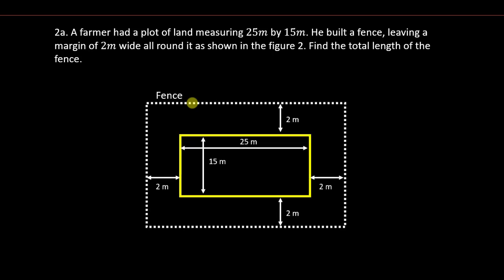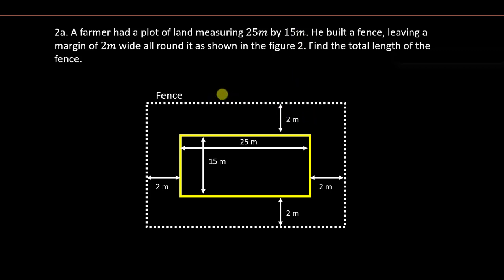This is the figure 2 they are referring to. The land is highlighted in yellow within the boundary, which is the fence. The fence is rectangular because the measurements were given — the length is 25 meters and the breadth or width is 15 meters. We are going to figure out how to calculate the total length of the fence used.